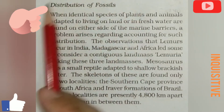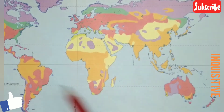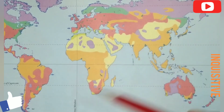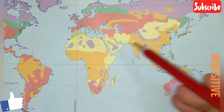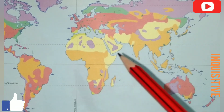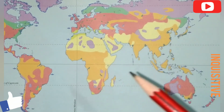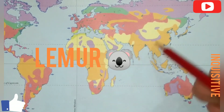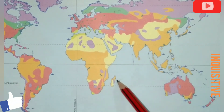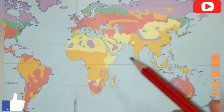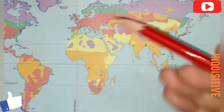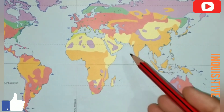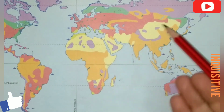The next evidence is the distribution of fossils. When identical species — adapted to live on land as well as in freshwater — are found on either side of marine barriers, it is significant. For example, the Lemur is found in India, Madagascar, and Africa. Similarly, their skeletons are also found across these continents, making it good evidence in support of continental drift theory.